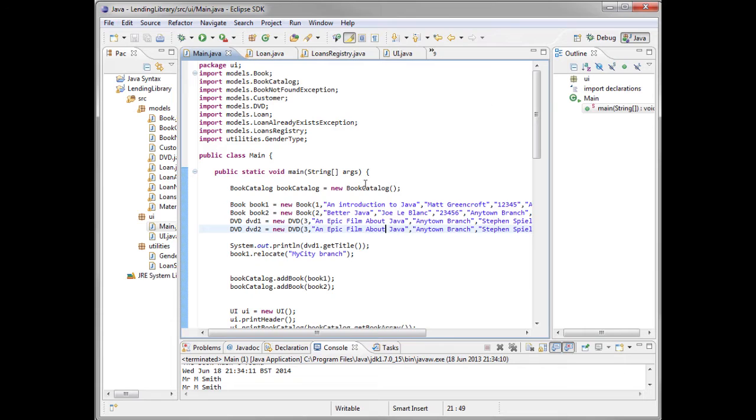The main place that we saw the word static was in our main method of our main class. You'll remember that this is the method that is required to make a Java program runnable and it takes the form of public static void main and then in brackets string open and close square brackets args.